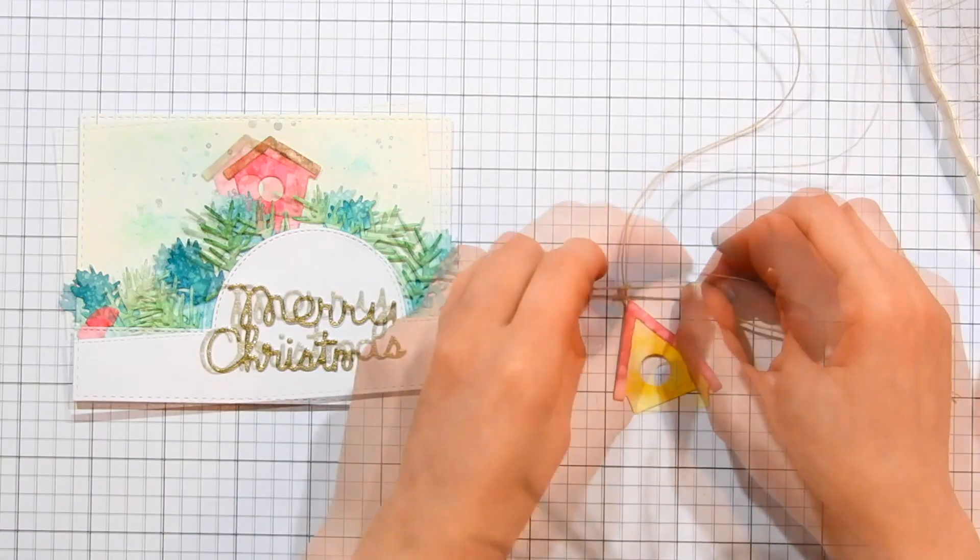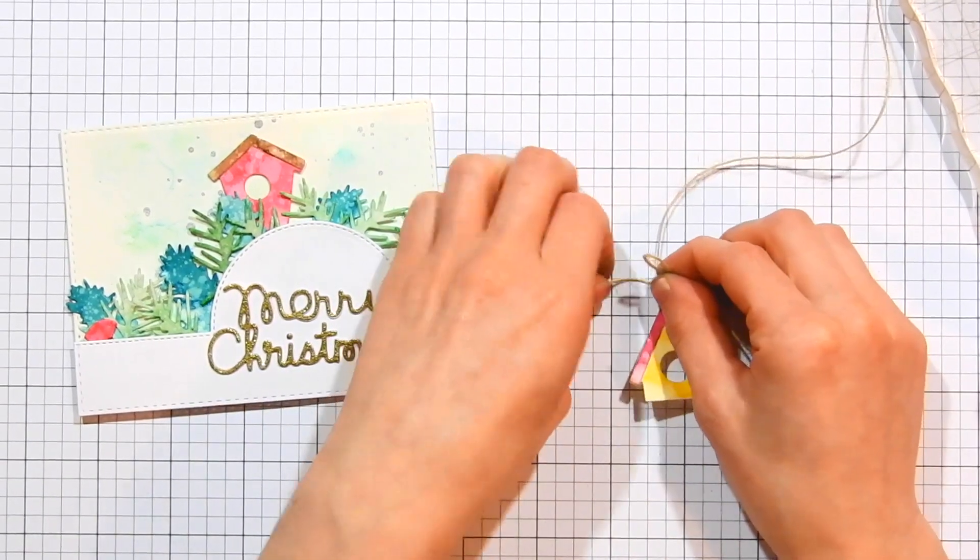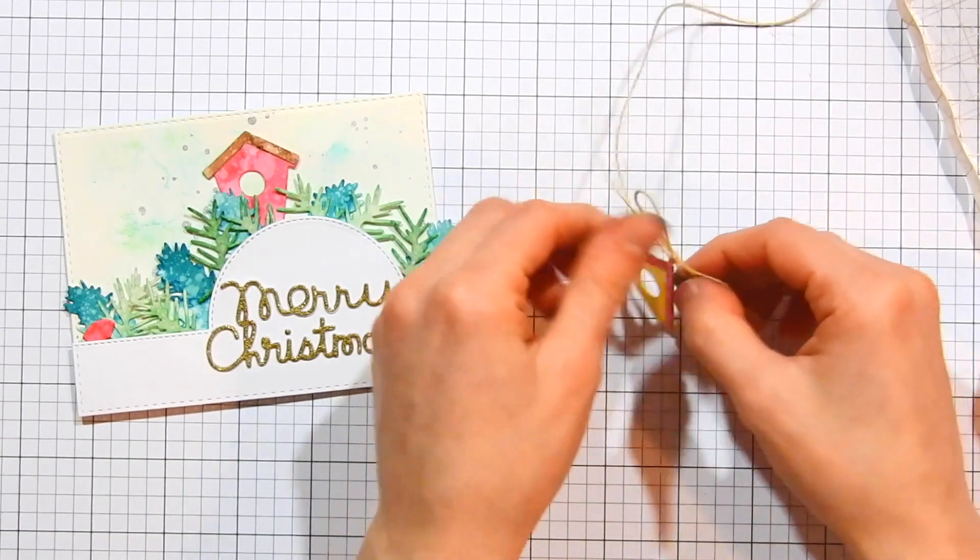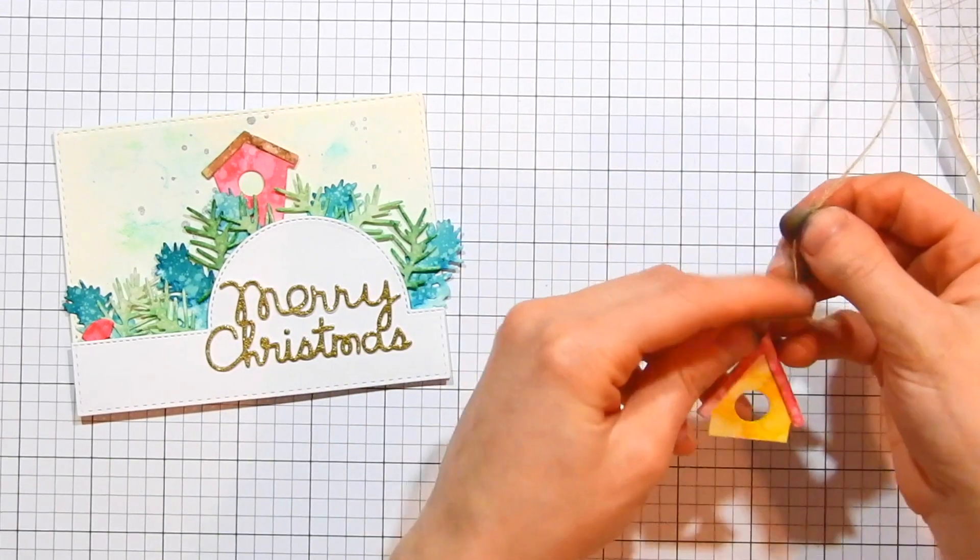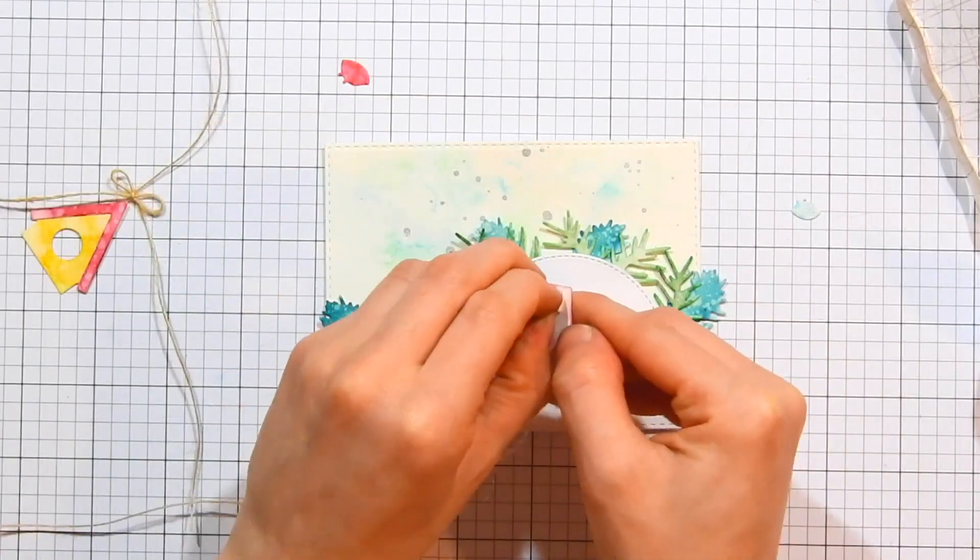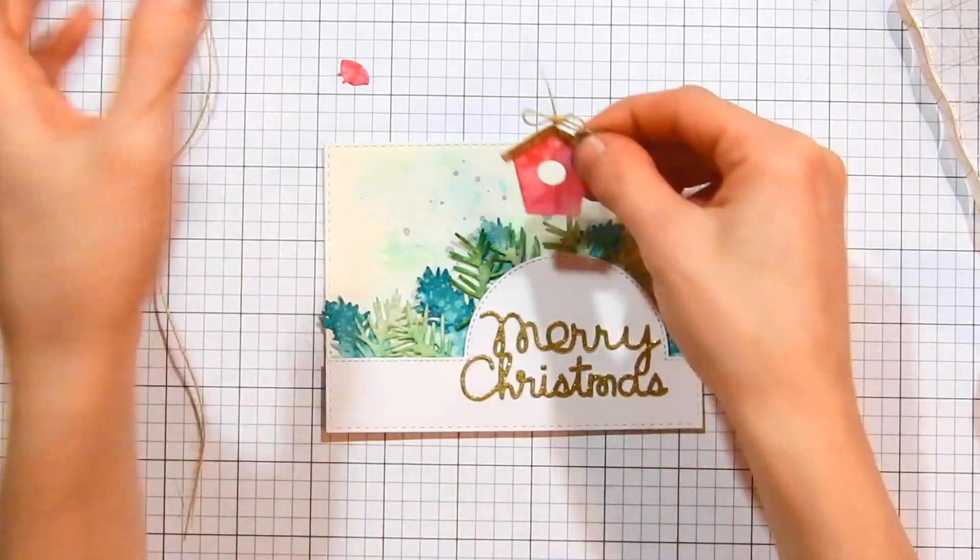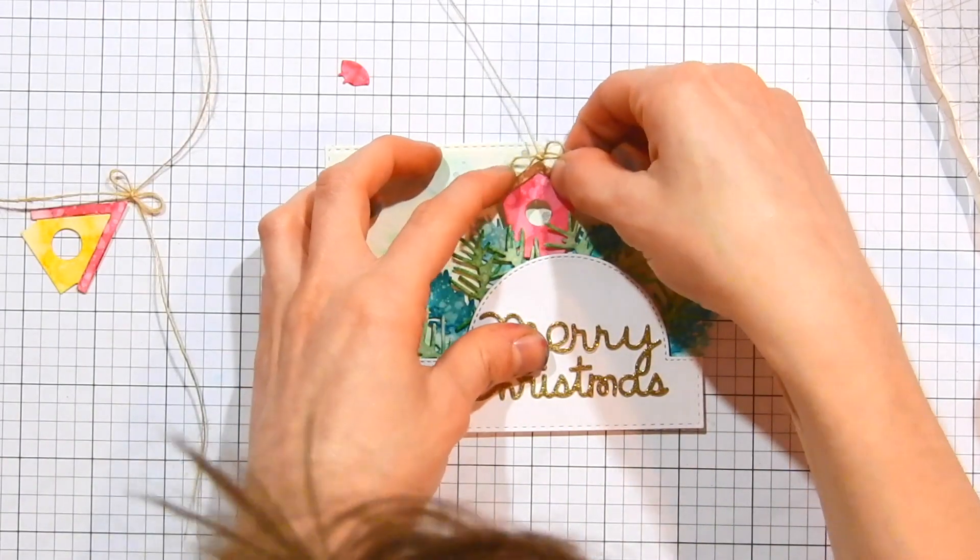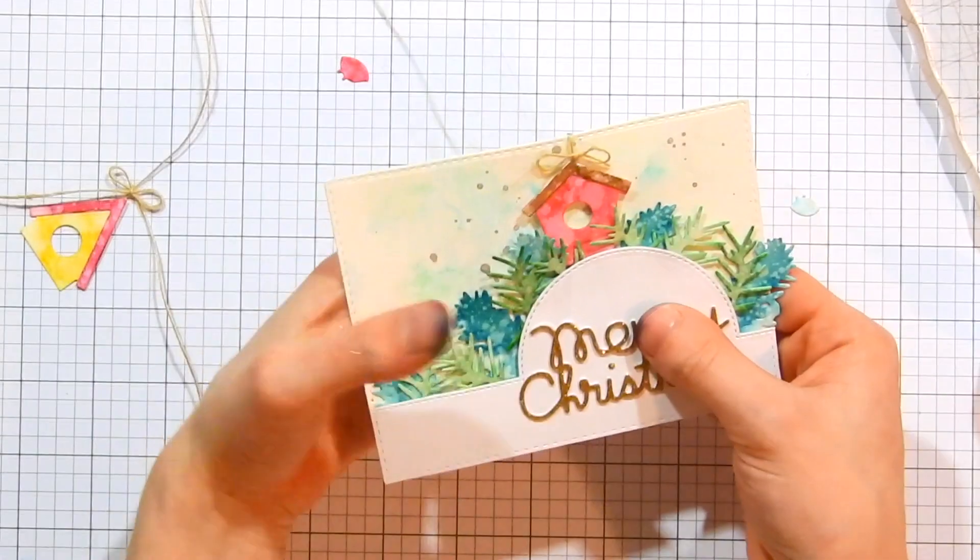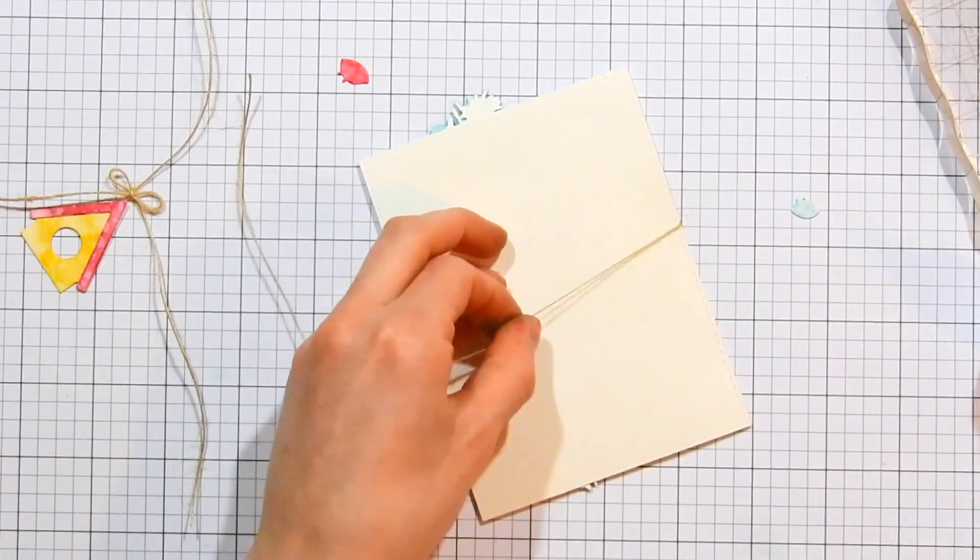The reason I'm tying it around the second strand of string is because that way I won't have to actually glue this down onto my card—it's already tied to something, so it's not going to end up coming off of my card, which makes it much safer for mailing. I'm attaching some fun foam to the backside of the houses and I'll tuck them down in between my pine boughs.